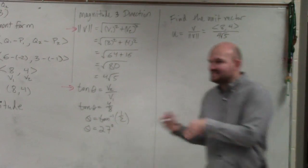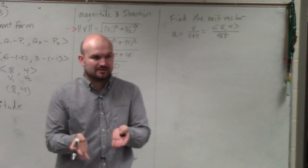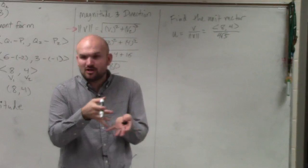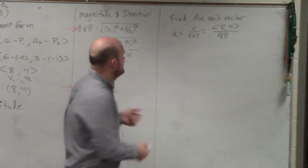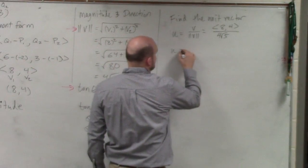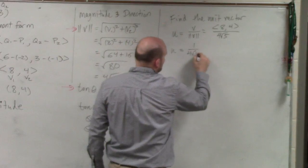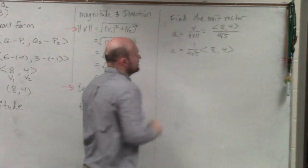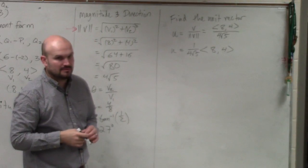Correct? Now, is dividing the same thing as multiplying by a fraction? Is dividing by 2 the same thing as multiplying by 1 half? Yes. So I could rewrite this as 1 over 4 square root of 5 times 8 comma 4. Do you guys agree with me those are the exact same thing? Yes.